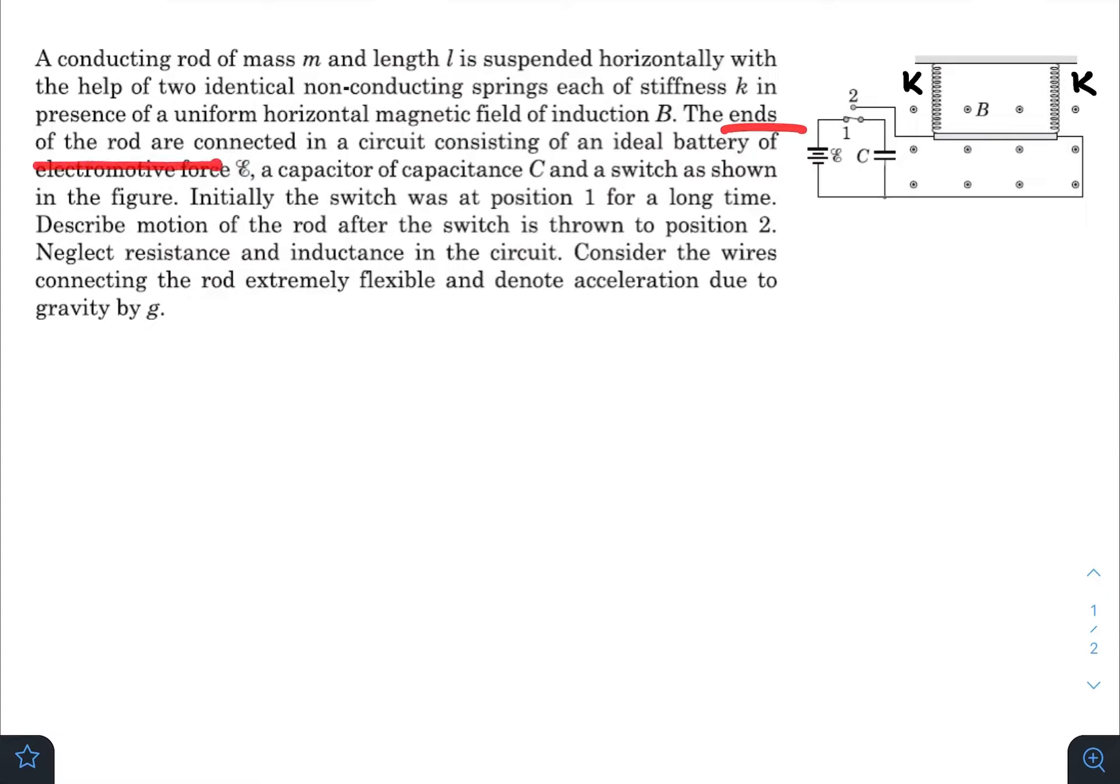The ends of the rod are connected in a circuit with a battery and a capacitor. Initially the switch was at position 1 for a long time, so the capacitor is being charged and has already reached its steady state. The capacitor already has a charge of E times C.